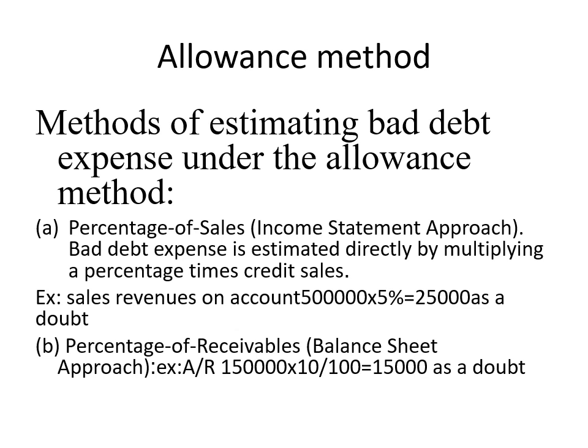We are going to study the allowance method. The first approach is estimation as a percentage of sales — we call this the income statement approach, because sales revenue is in the income statement. If the allowance for uncollectible accounts is given as a percentage of credit sales revenue, for example: sales revenue on account is 500,000 and we estimate 5% as the allowance for uncollectible accounts, then 500,000 × 5% = 25,000. So your allowance for uncollectible accounts will be calculated as 25,000.